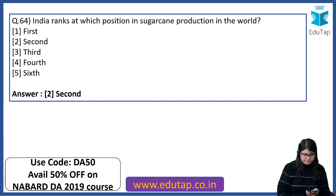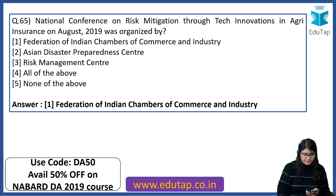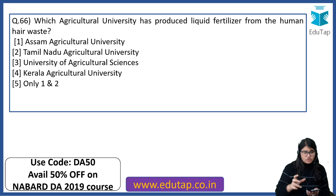The National Conference on Risk Mitigation through Tech Innovations and Agri Insurance in August 2019 was organized by which organization? The answer is Federation of Indian Chambers of Commerce and Industry. Which agricultural university has produced liquid fertilizer from human hair waste? The right answer is Kerala Agricultural University.